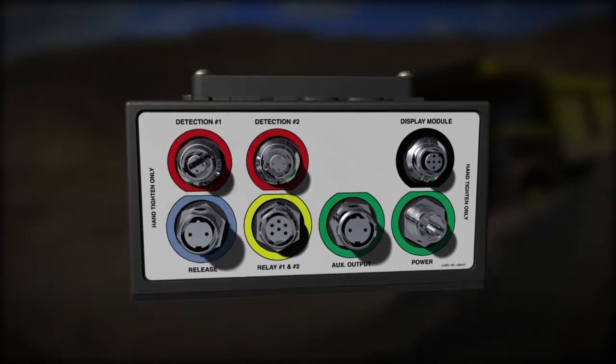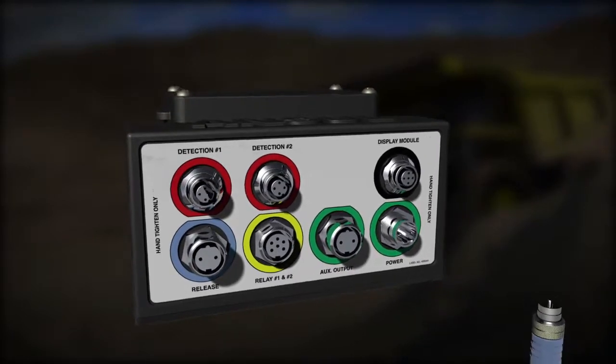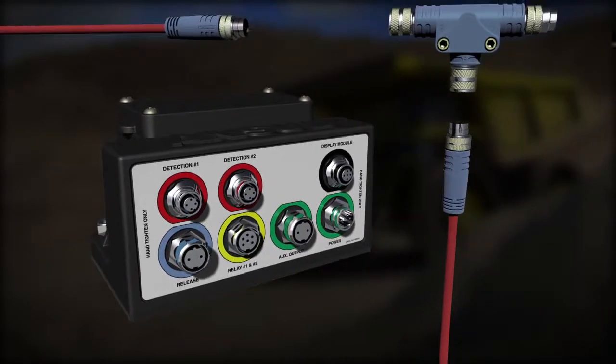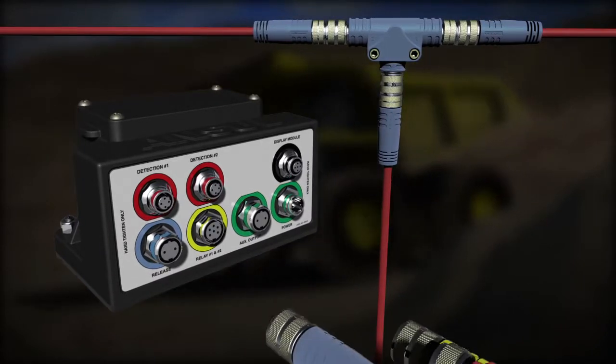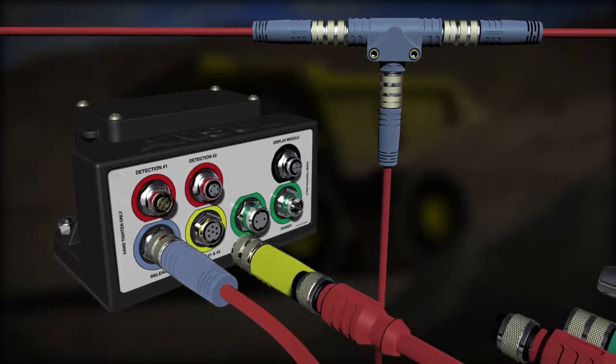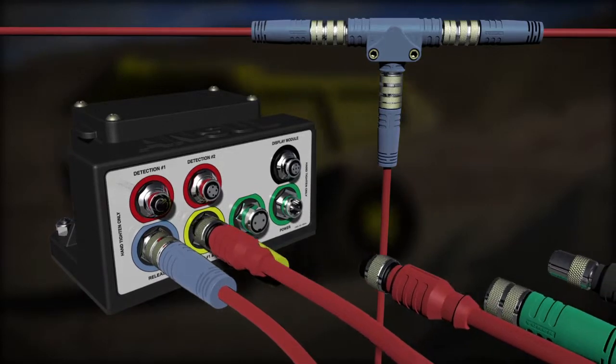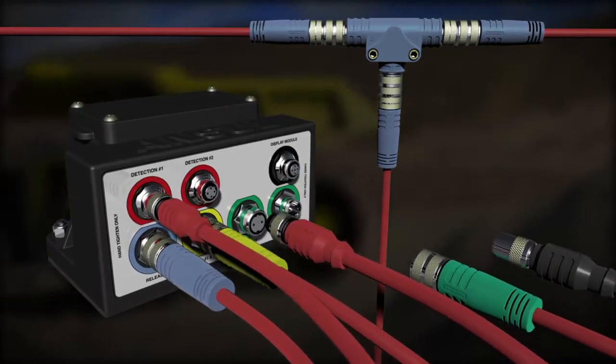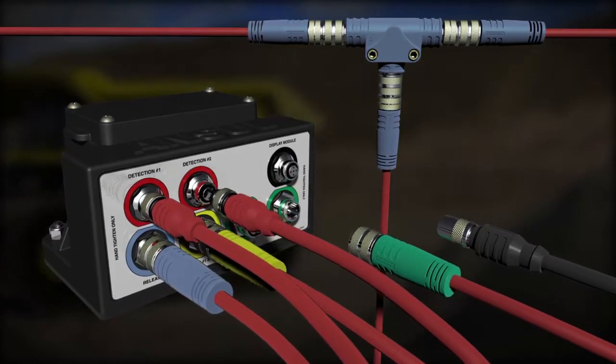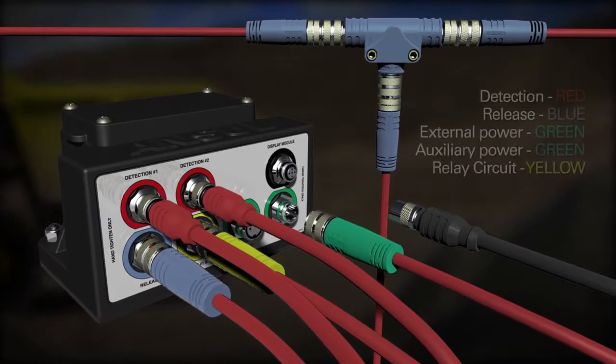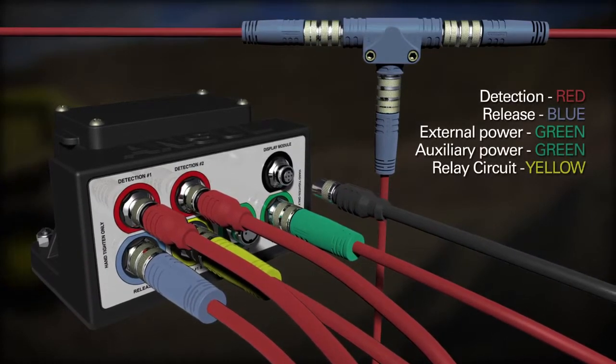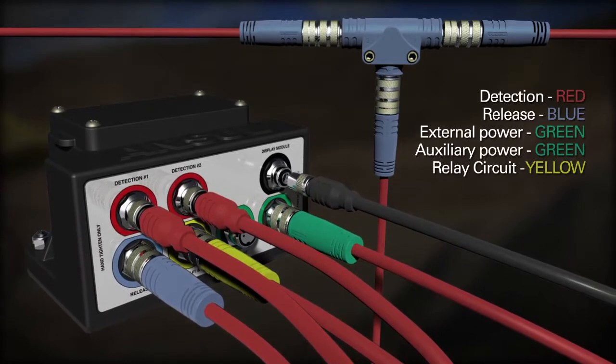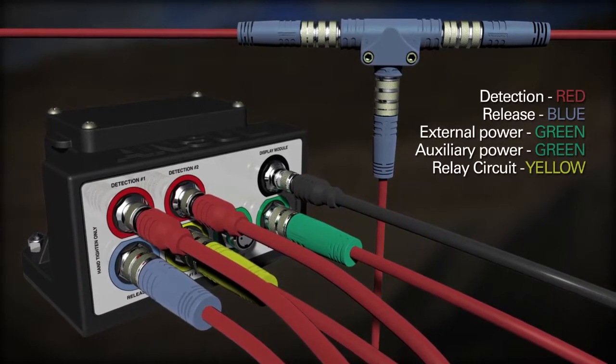The CheckFire 210 system utilizes IP67 circular threaded connectors on all cables and components. These dust and watertight cable harness connections help protect the detection and actuation system from rigorous operating and environmental conditions. All cabling is plug-and-play over-molded connectors in corresponding colors for ease of installation and replacement in the event of damaged cables.